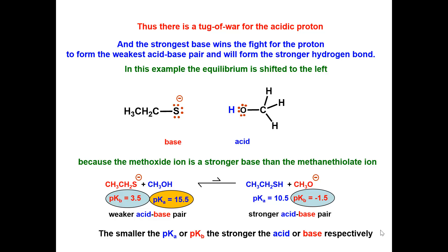If we look at the acids, the pKa of methanol is 15.5 and for the thiol, the pKa is 10.5. So the thiol is the stronger acid. The equilibrium will shift to the weaker acid-base pair, the smaller pKa and pKB values.